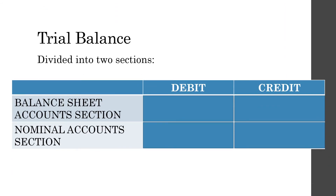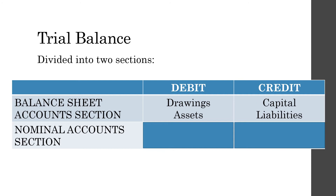The trial balance is divided into two sections: the balance sheet account section and the nominal account section. Balance sheet accounts with debit balances are drawings and assets. Balance sheet accounts with credit balances are capital and liabilities. Nominal accounts with debit balances are expenses, and nominal accounts with credit balances are income.